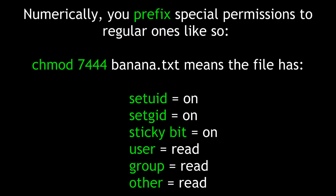Numerically, you prefix special permissions to regular ones. chmod 7444 banana.txt means this text file has set UID, set GID, and sticky bit all turned on — that first 7 is 4 plus 2 plus 1. The remaining three 4s mean that user, group, and other each have read permission.